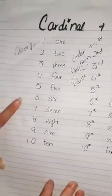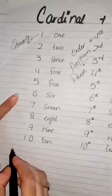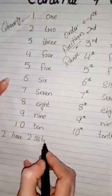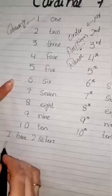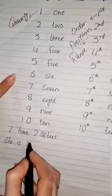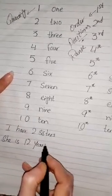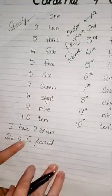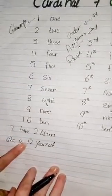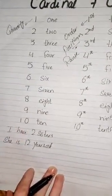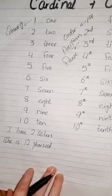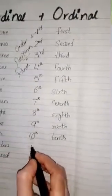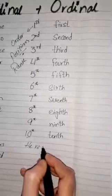For example, I have two sisters. She is 12 years old. Here 2 and 12 are quantity of something. So the cardinal numbers are those numbers which show us quantity. Now ordinal numbers...